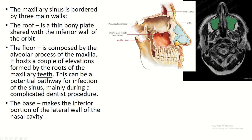The roof is separated from the orbit by a thin plate of bone forming the inferior wall of the orbit. The floor is composed of the alveolar process of the maxilla, and the base is the portion of the lateral wall of the nasal cavity.